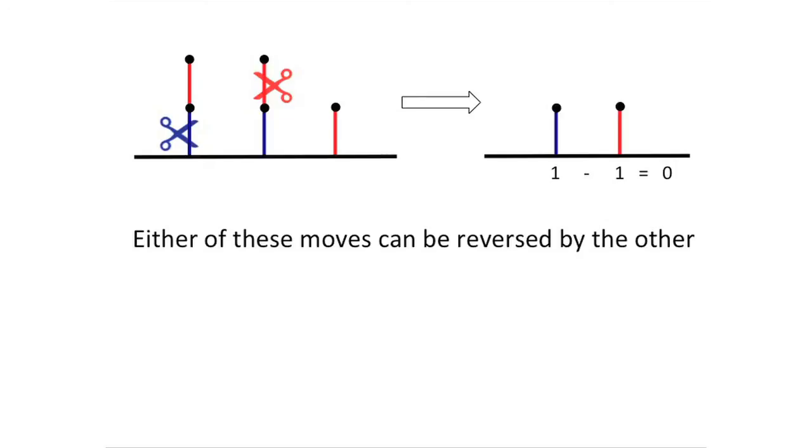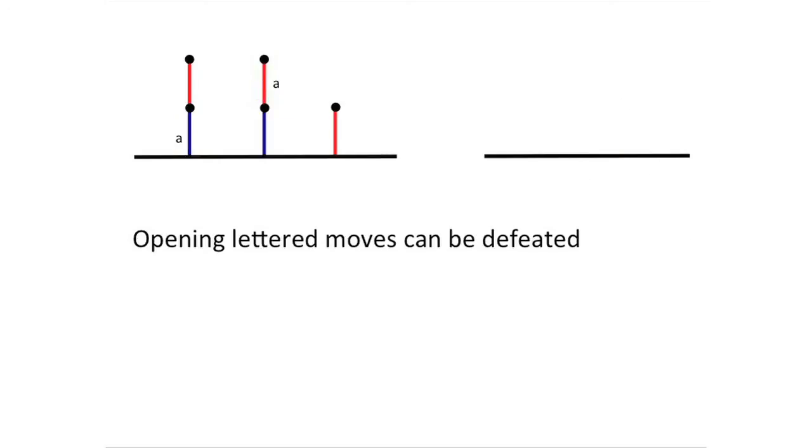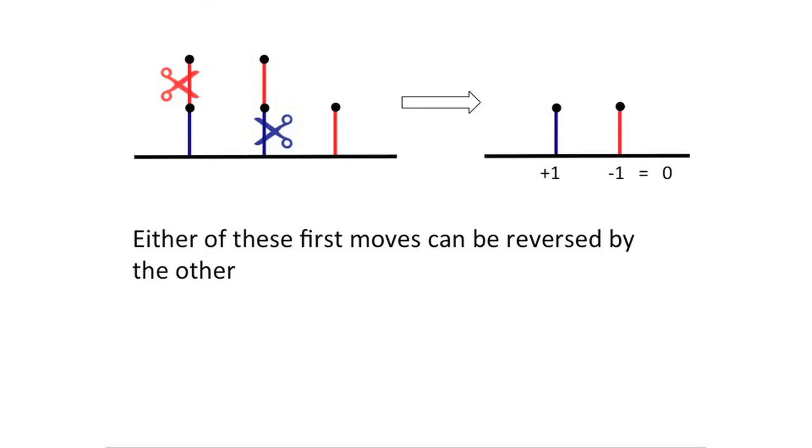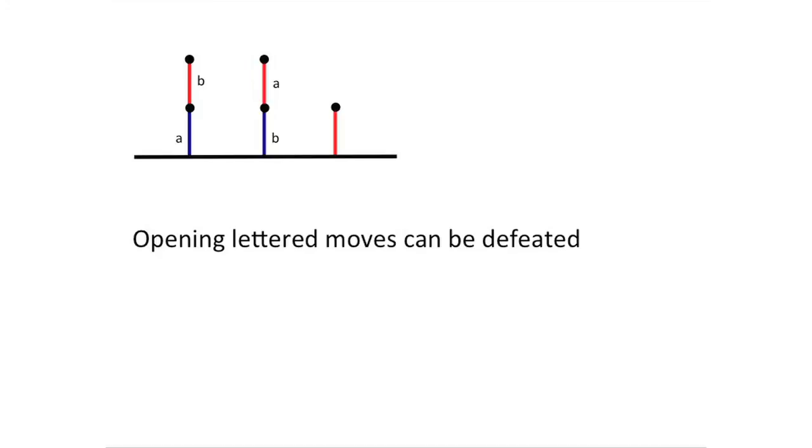his opponent can reply with the other one, yielding the zero position now shown in the east. So either first move labeled A can be defeated by playing the other A. Similarly, either branch labeled B can be defeated by playing the other B.